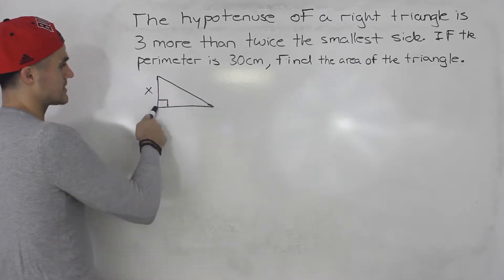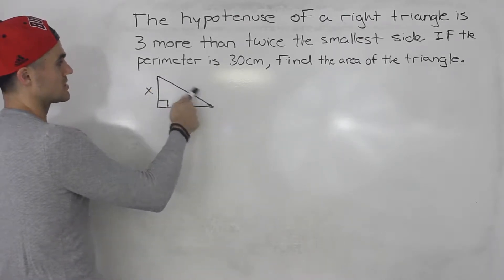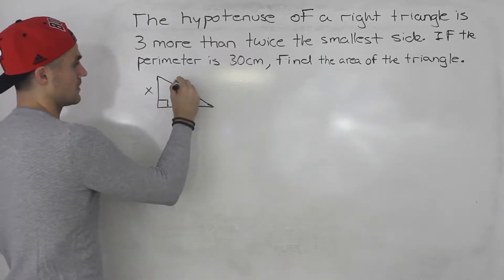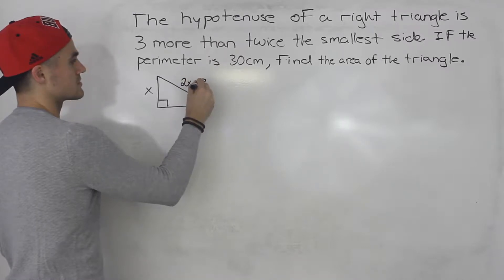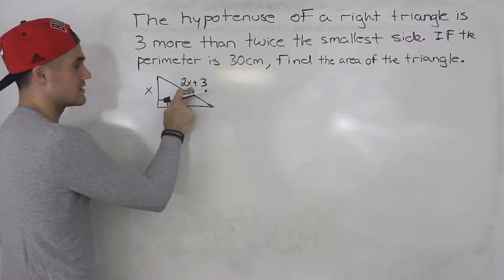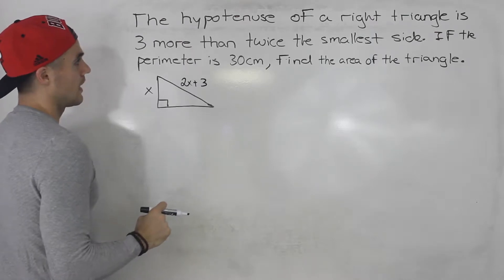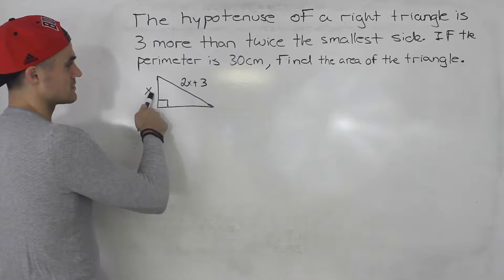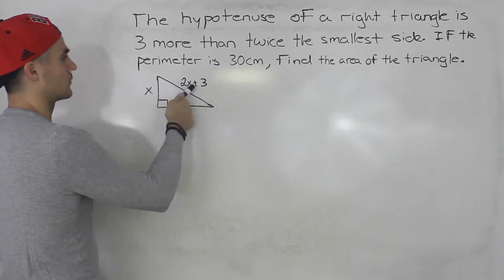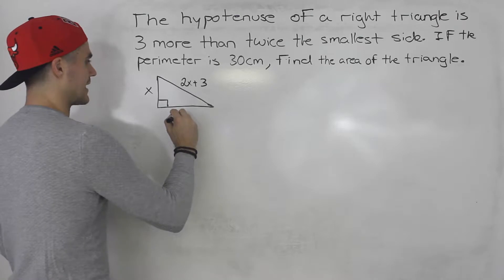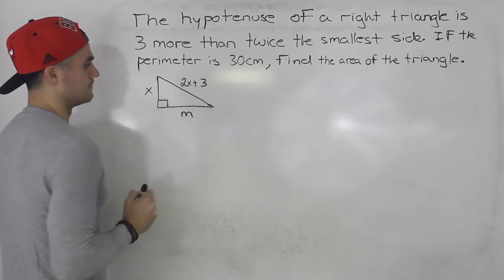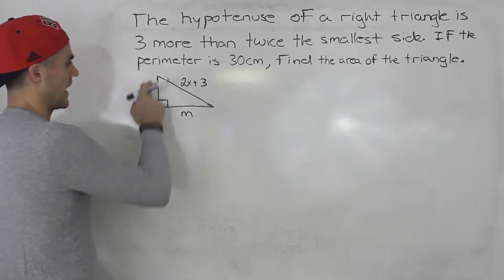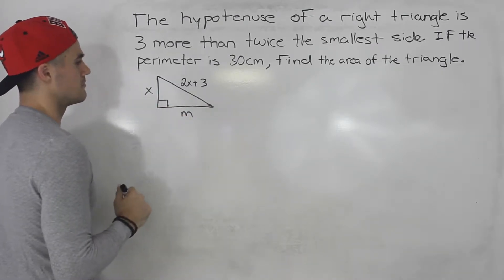If the height is x, then we know the hypotenuse is three more than twice the height, the smallest side. So it would be 2x plus 3. Three more than twice the smallest side. Notice we're not really told anything about the base — how it relates to the height or the hypotenuse. So let's label it m, just another variable. So x is the height, m is the base.